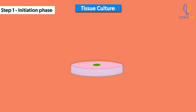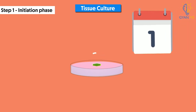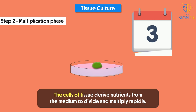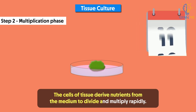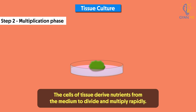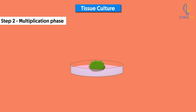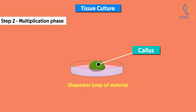The cells of the tissue derive nutrients from the medium to divide and multiply rapidly. This creates a shapeless lump of material now known as callus. This is the second step, called the multiplication phase.